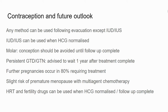Moving on to contraception and future outlook — it's suitable to have any method of contraception following evacuation, apart from an intrauterine device or intrauterine system such as the Mirena or copper coil. These can be used, but only once the beta-HCG has normalised. After a simple molar pregnancy, avoid conception until follow-up is completed. For persistent GTD or GTN, advise waiting a year after treatment is complete to detect any earlier recurrence. It's optimistic — further pregnancies do occur in 80% of women who have required treatment. However, there is a slight risk of premature menopause where multi-agent chemotherapy is used, so it's really important to warn women about that risk when considering their future fertility.